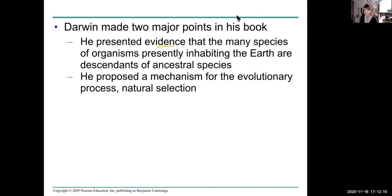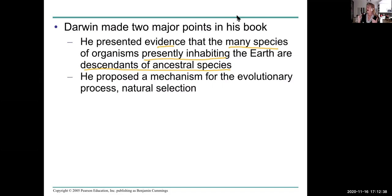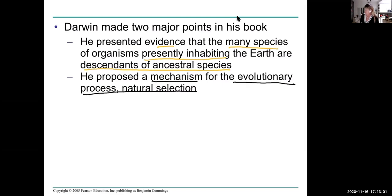First, evidence that the many species of organisms presently inhabiting the earth are descendants of ancestral species. Darwin noticed fossils and thought: why would God allow some species to become extinct? It turns out that literally 99.9% of all species that have ever existed on the planet are now extinct. Second, he proposed a mechanism for this evolutionary process — natural selection.